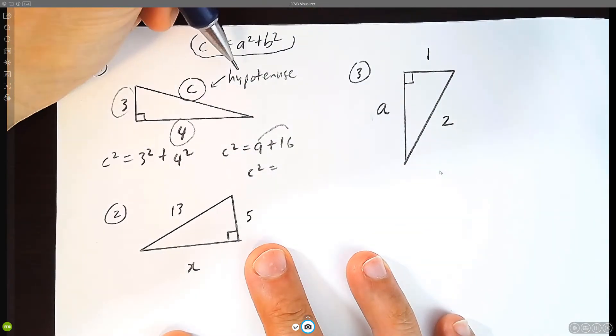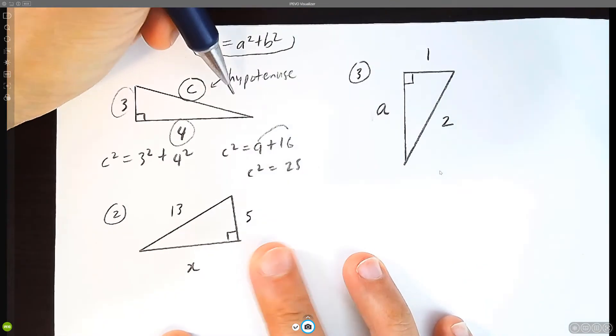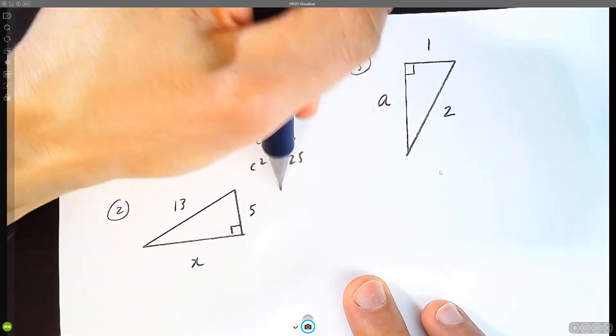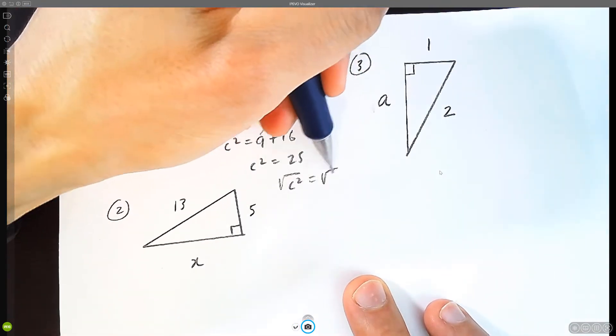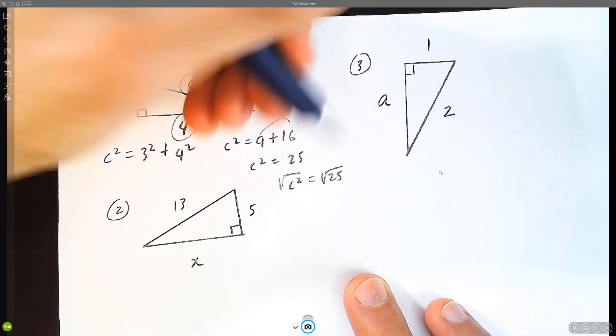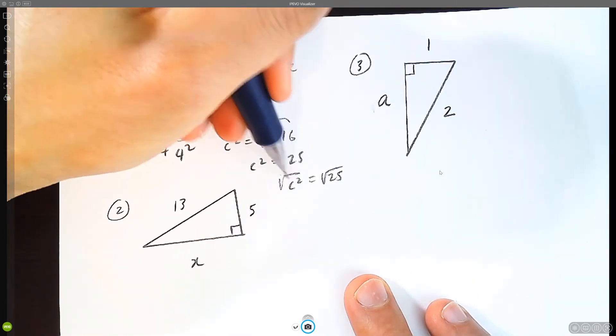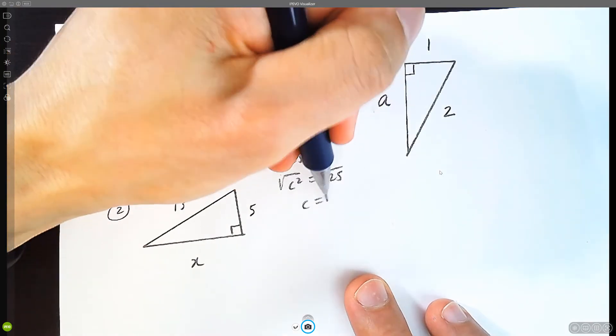So we have c squared equals nine plus sixteen. Nine plus sixteen, if you add them up together, is twenty-five. And in math, you're allowed to take the square root of both sides. The square root and the squaring, they cancel each other out. So you have c equals five.